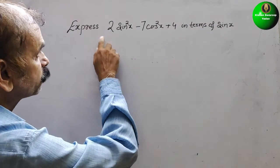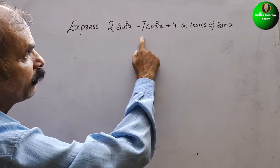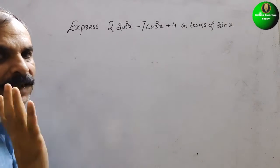Your question is, express 2 sin square x minus 7 cos square x plus 4 in terms of sin x.